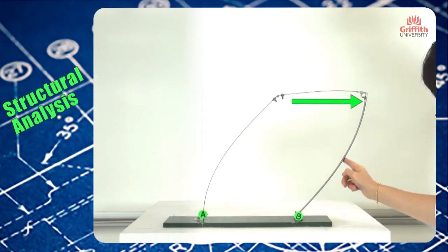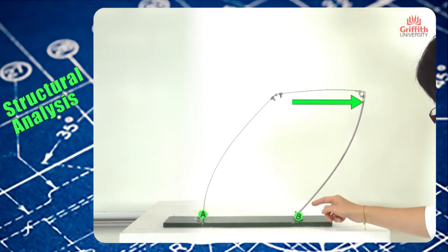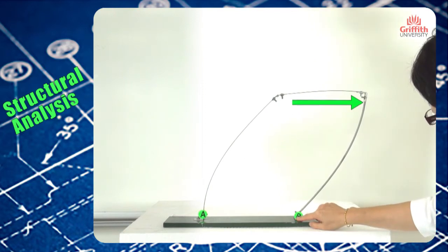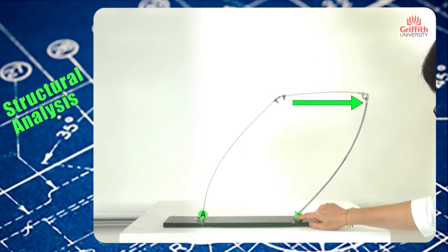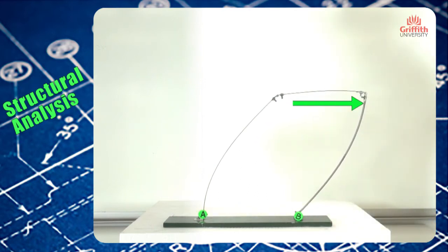And this column here also develops into a single curvature because point B is a hinge support—the rotation is permitted. Therefore it develops into a single curvature with no control flexor point. So therefore in the whole frame, no control flexor point anywhere.